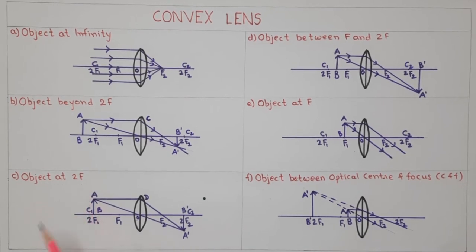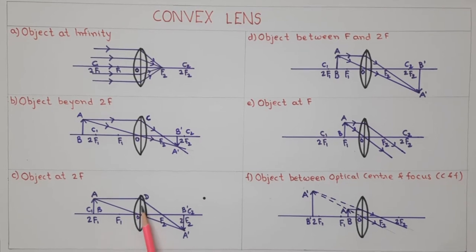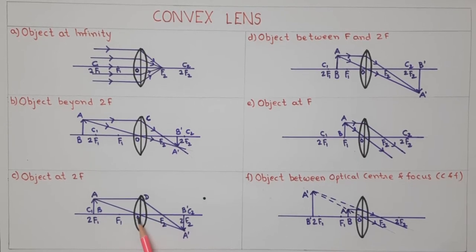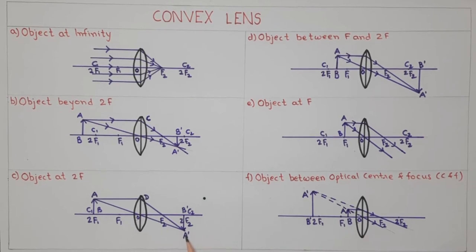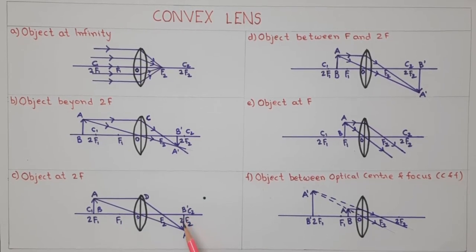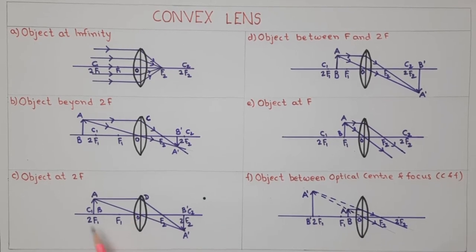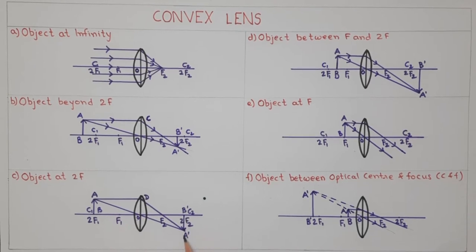Third case: object at 2f. Object AB is kept at 2f of the convex lens. Ray AD is parallel to the principal axis; after refraction it passes through the principal focus F. Ray AO passes through the optical center O and goes straight, meeting the first refracted ray at point A dash. Drawing A dash B dash perpendicular to the axis gives the image. When the object is placed at 2f, the image forms at 2f on the other side of the lens — real, inverted, and of the same size as the object.